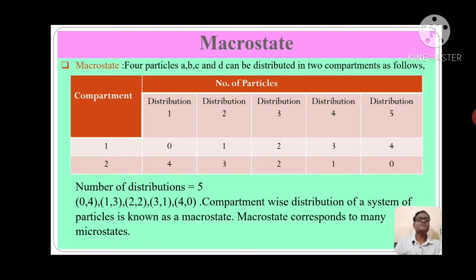Through this table we can see compartment 1, compartment 2, and number of particles, with distributions 1 through 5. In distribution 1, there is no particle in compartment 1 and there are 4 particles in compartment 2. In distribution 2, there is 1 particle in compartment 1 and 3 particles in compartment 2. In distribution 3, there are 2 particles in each compartment. In distribution 4, there are 3 particles in compartment 1 and 1 in compartment 2. In distribution 5, there are 4 particles in compartment 1 and no particle in compartment 2.